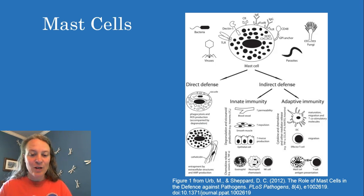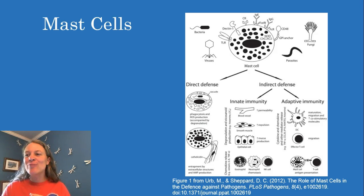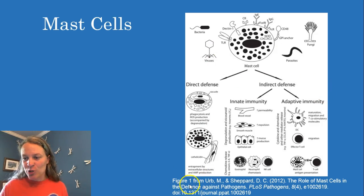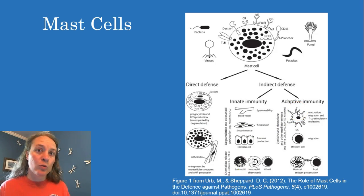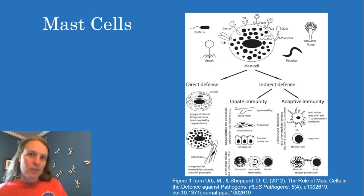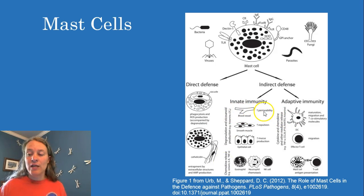Lastly, I want to talk about mast cells. We typically think of mast cells when thinking about allergic responses, histamine responses, IgE responses, and things like that. But it turns out — as shown in this chart from the Urban Shepherd paper — they actually have many more roles in the immune system. They are phagocytes and will phagocytose problem substances, degranulate, and contribute to the inflammatory process. They are also involved in increasing blood vessel permeability.